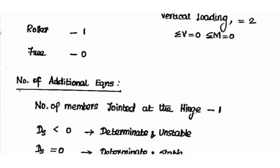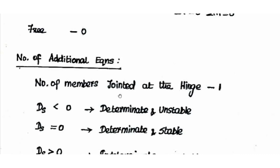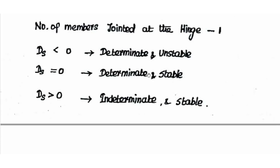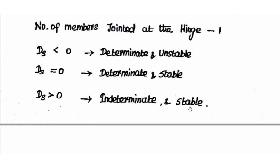For additional equations, we use: number of members jointed at the hinge minus 1. At a hinge, the additional equations = number of members jointed at the hinge minus 1. Interpretation of static indeterminacy value: less than 0 means determinate and unstable; equal to 0 means determinate and stable; greater than 0 means indeterminate and stable. If value = 1, structure is indeterminate to 1 degree; if 2, indeterminate to 2 degrees, and so on.